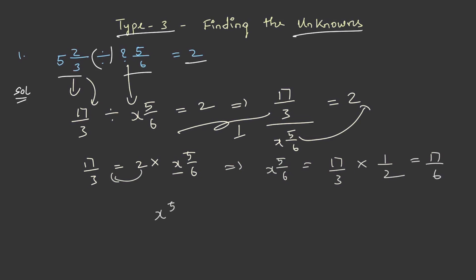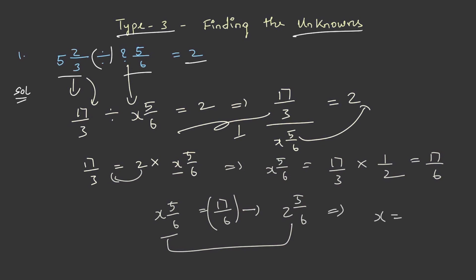Now, x 5 by 6 — this is a mixed fraction — is equal to 17 by 6. On converting 17 by 6 into a mixed fraction, we get 2 5 by 6. On equating these two, we can get the value of x, that is x is equal to 2. This is the answer.